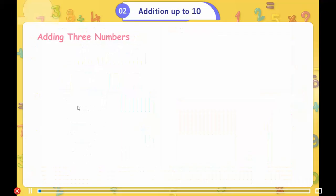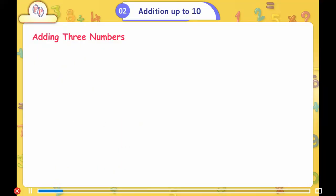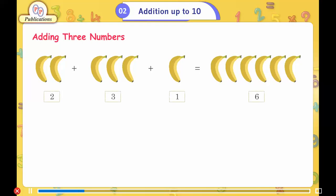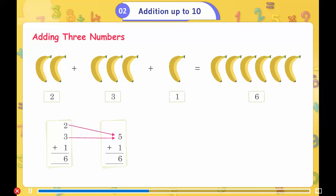Adding three numbers. 2 plus 3 plus 1 is equal to 6. First add 2 plus 3 to get 5, then 5 plus 1 is equal to 6.